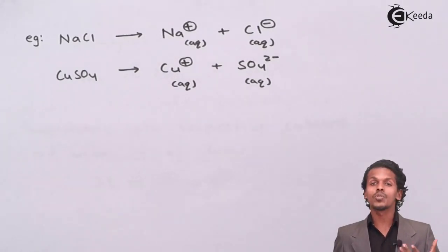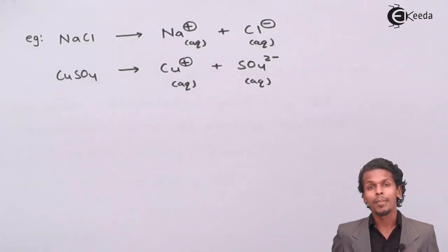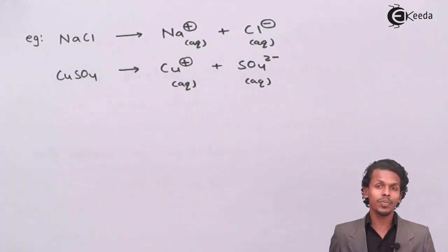Similarly it happens with copper sulfate also. Copper sulfate is also a very strong electrolyte and it helps passage of electricity by completely dissociating. So it dissociates completely into Cu2+ ion and gives an anion like SO4 2- sulfate ion.